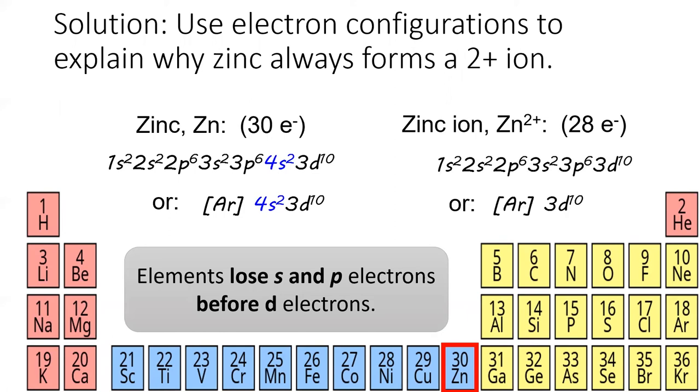It loses those two electrons to form a 2 plus ion. Zinc is quite happy with this electron configuration because all of its subshells in level 3 are full. All the elements in zinc's column have a full d subshell, which explains why they always form 2 plus ions.